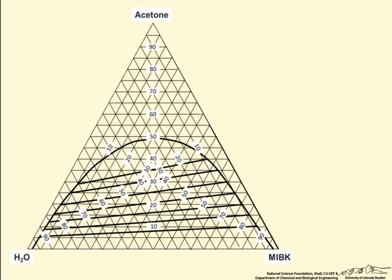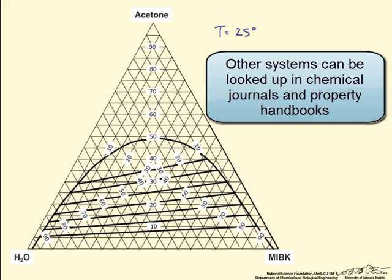This screencast goes over a phase diagram for a ternary system. We have three partially miscible species: water, acetone, and MIBK, represented by this triangular phase diagram. This particular phase diagram is for a system at 25 degrees Celsius.